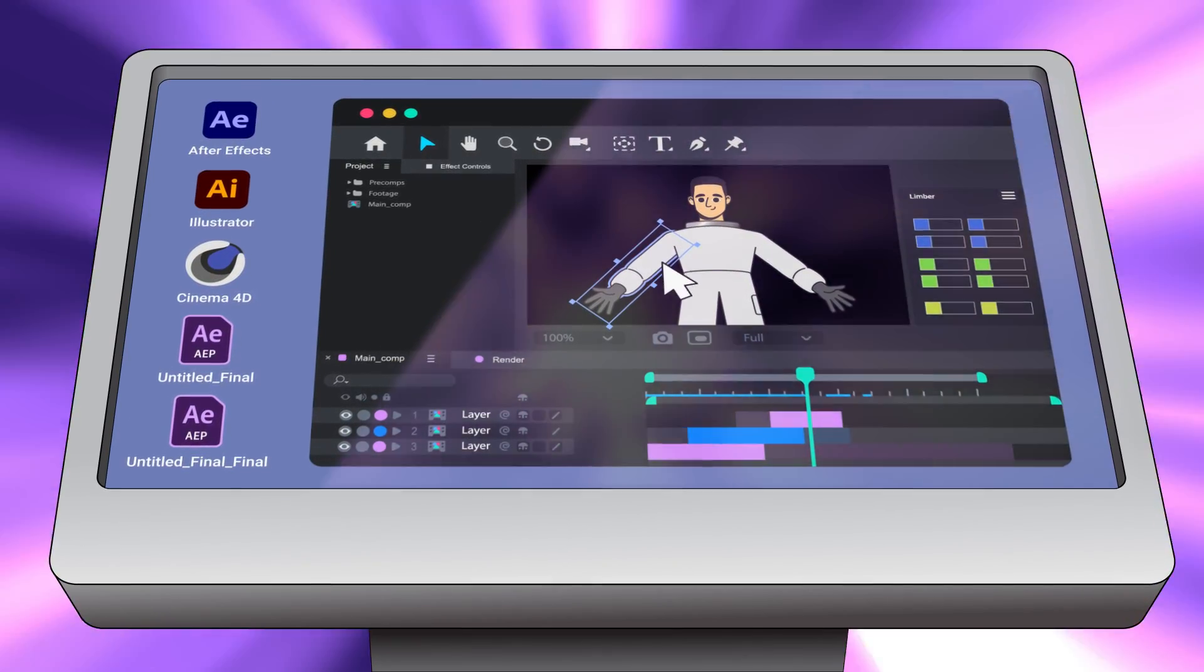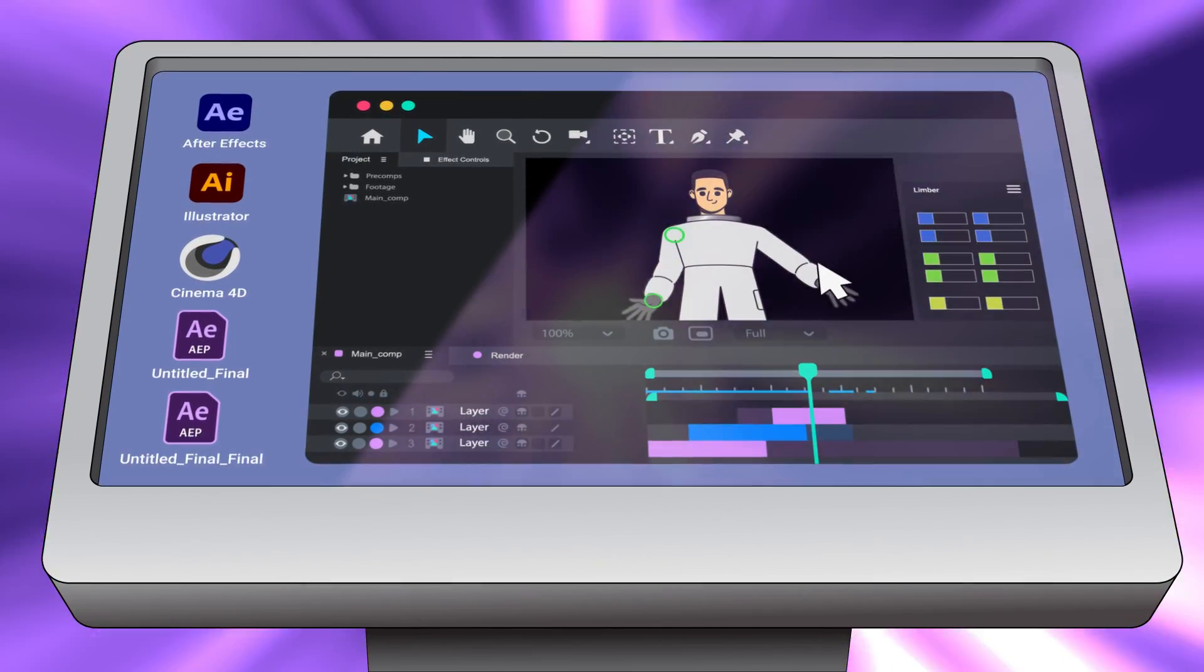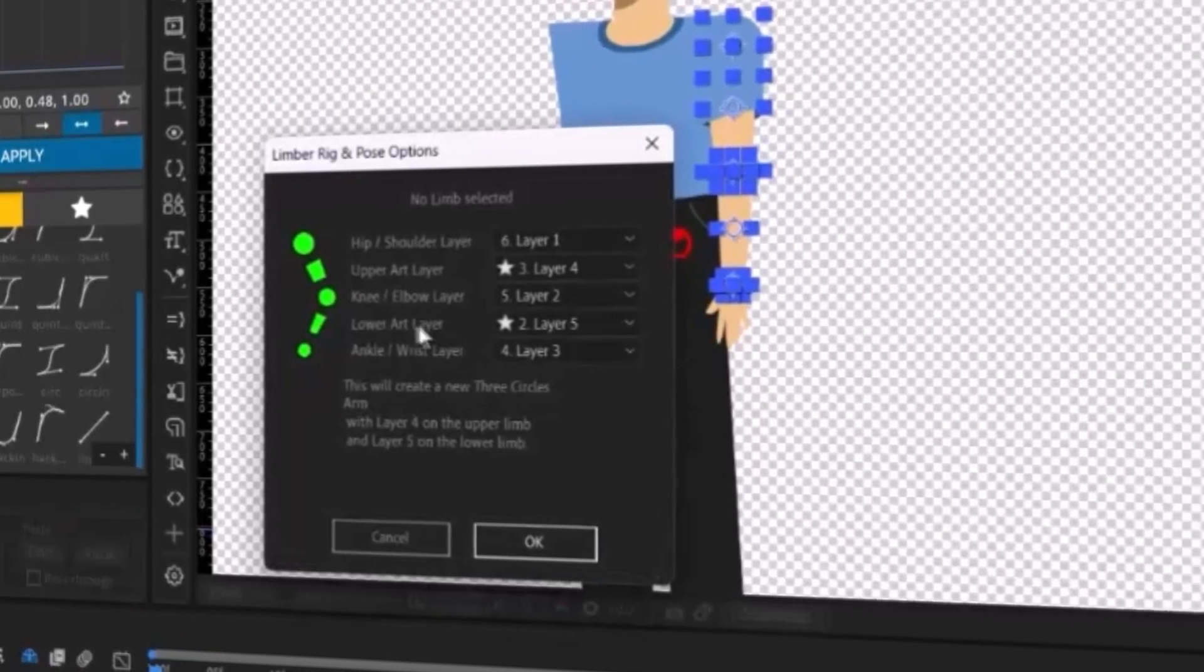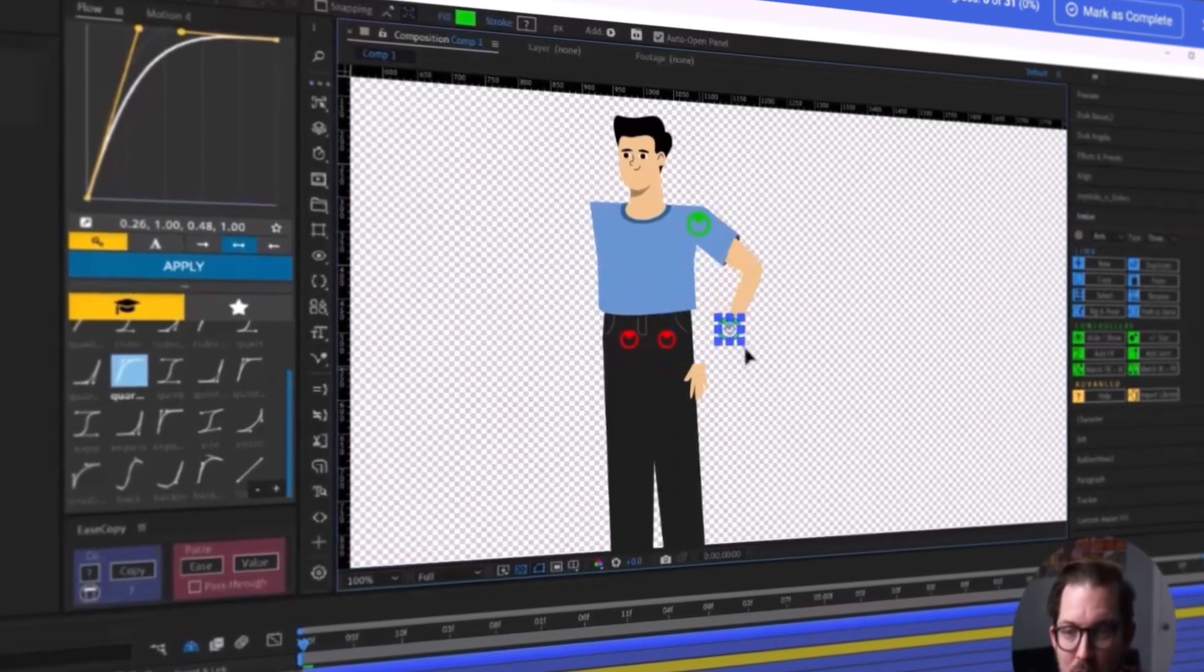Stage 2: Rigging your character. Save valuable time by mastering efficient rigging techniques with Limber. Spend less time wrestling with your tools and more time bringing your characters to life.